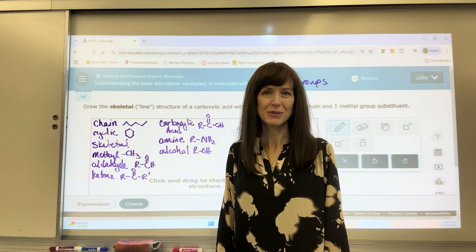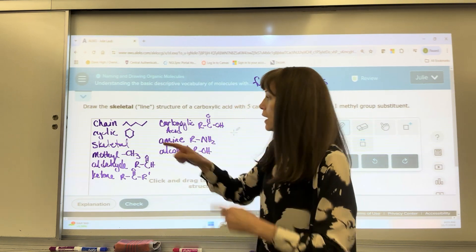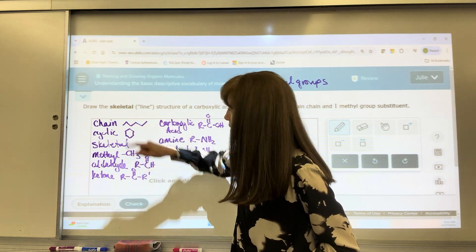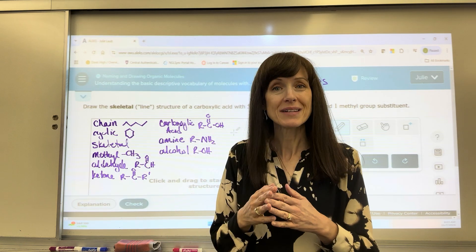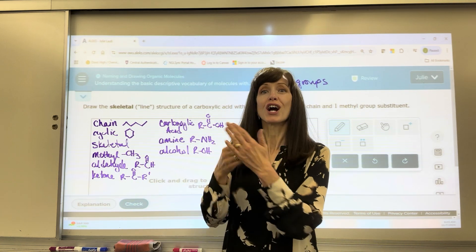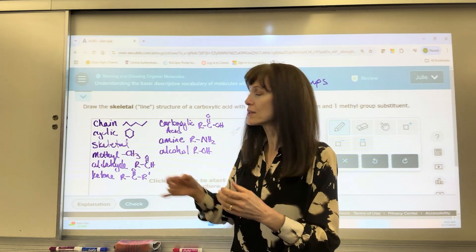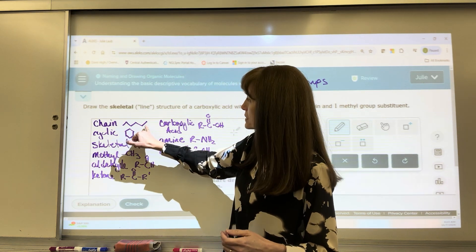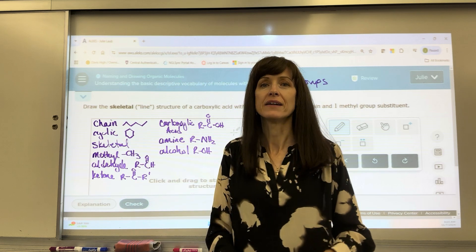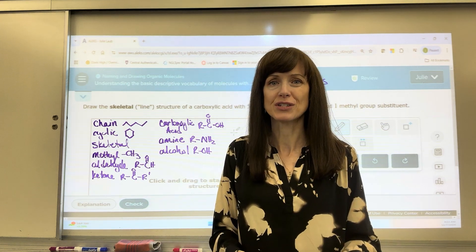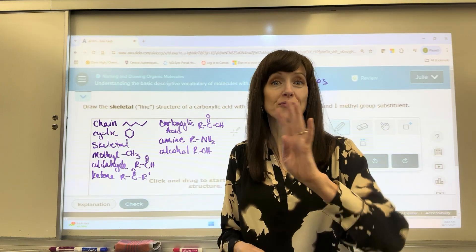Skeletal structures. Just want to remind you that the vertices, the lows and the highs, those indicate carbons and the hydrogens are understood. You can count the bonds for that carbon. In this case, I'd have two bonds and it's understood that there are enough hydrogens to bring that carbon to a total of four bonds.